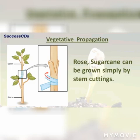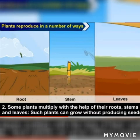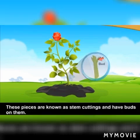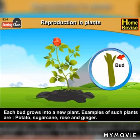The next method is by stem cuttings. Rose and sugarcane can be grown simply by stem cuttings. New plants can grow from pieces of the stem — these pieces are known as stem cuttings and have buds on them. Each bud grows into a new plant. Examples of such plants are potato, sugarcane, rose, and ginger.